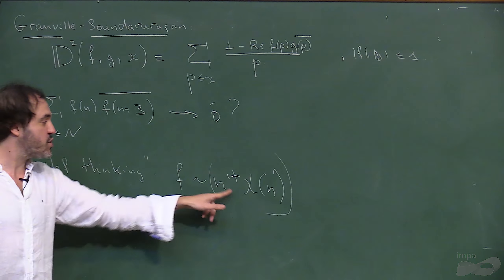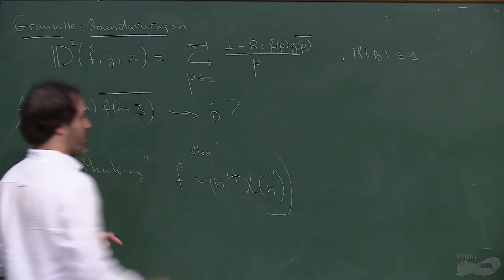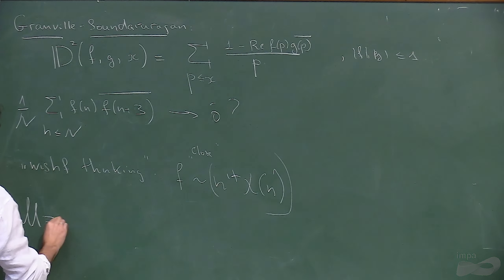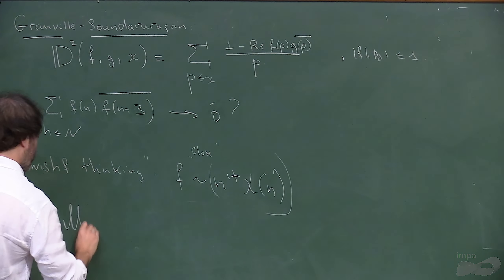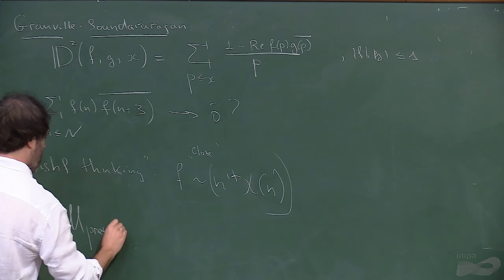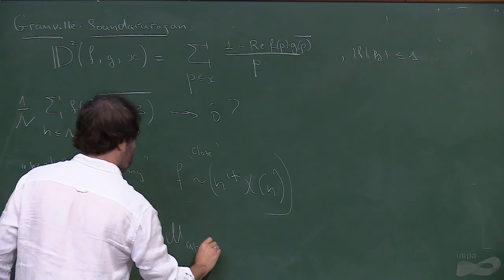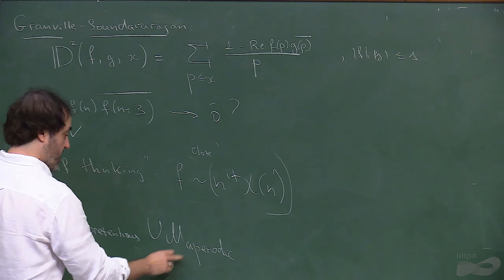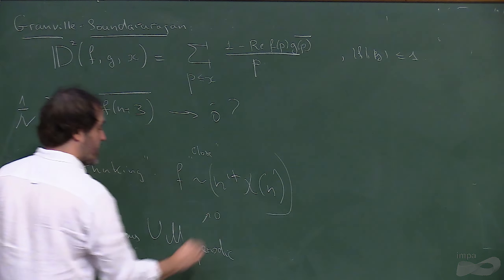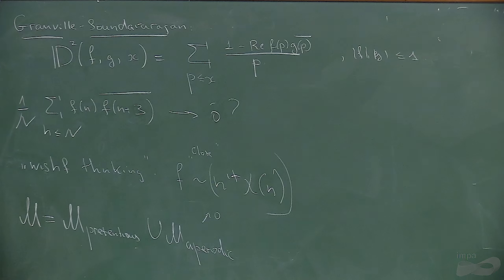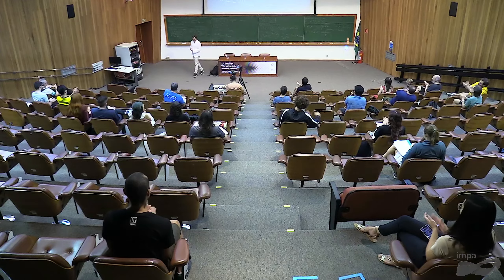In conclusion, what we essentially did is partition the space of multiplicative functions into those which are pretentious — which give the major arc contribution — and those which ergodic theorists call aperiodic, i.e., non-pretentious, which give the minor arc. For the aperiodic functions everything goes to zero. The major arc requires separate analytic arguments to handle. That's the structure of the proof. Thank you.